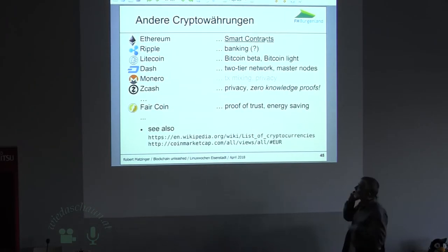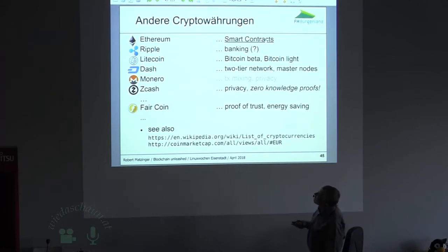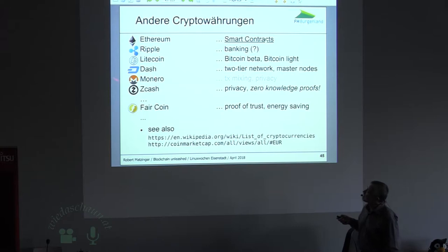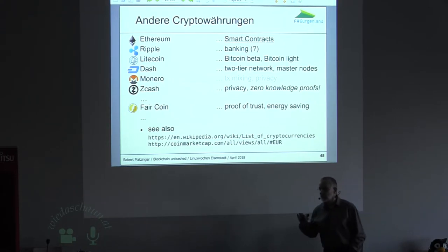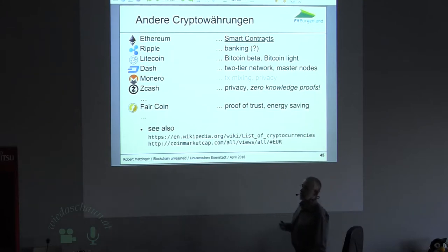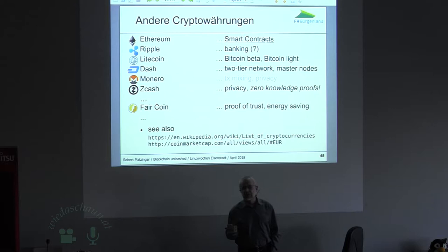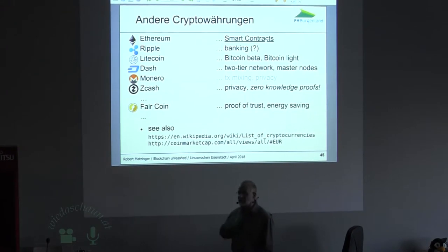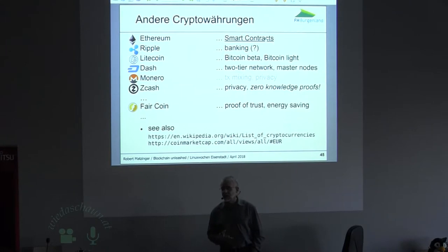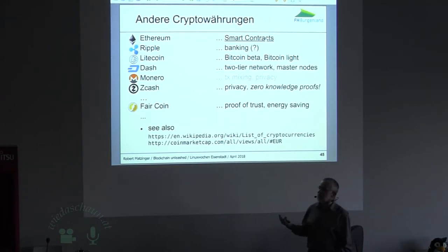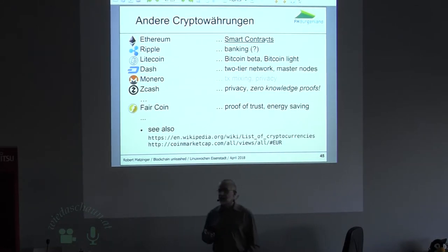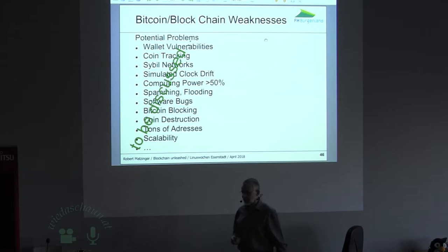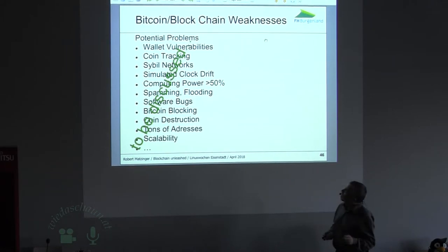Das sind so die wichtigsten alternativen Coins: Ethereum — komme ich noch drauf — Ripple, Litecoin, Dash, Monero und Zcash versprechen etwas mehr Privacy. Faircoin gefällt mir, weil er mit einem anderen Proof arbeitet, dem Proof of Trust. Überhaupt führt diese Demokratie der Rechenleistung auf der anderen Seite zu einer unglaublichen Energieverschwendung. Man schätzt, dass in der Größenordnung des Stromverbrauchs eines Kleinstaates Strom allein auf Coin-Mining verbraten wird, weil Rechenleistung alles ist — das ist auf Dauer kein Zustand. Das macht die Sache auch undemokratisch, weil die Coins daher gemeint werden in Island, in den kalten Regionen, in Russland, wo man keine Kühlleistung braucht, und damit ergibt sich eine Asymmetrie, die so auch nicht geplant war.